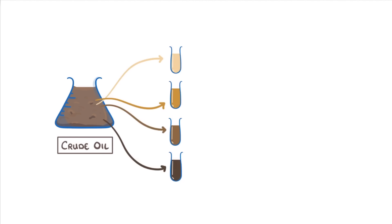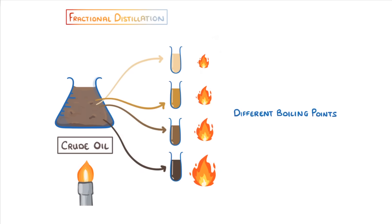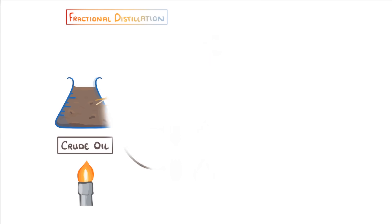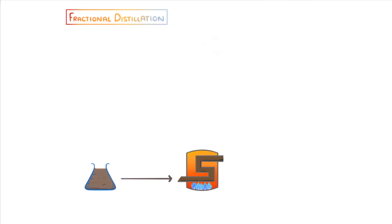To do this separating, we use a process called fractional distillation, which involves heating the crude oil up and separating out the different compounds by making use of the fact that the different compounds all have different boiling points. The first step is to feed the oil into a chamber and heat it until most of it has turned into a gas.